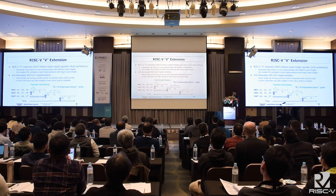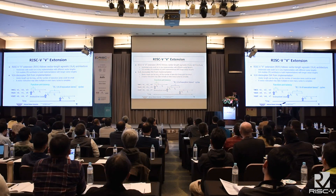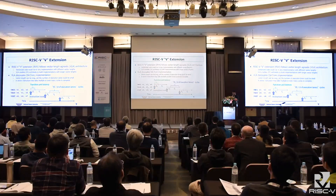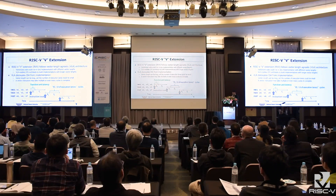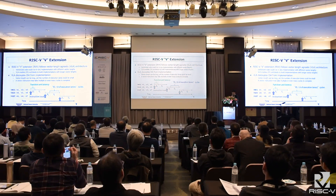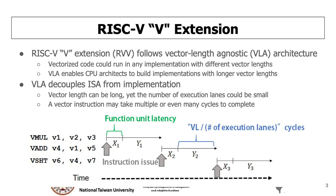The RISC-V vector extension follows the vector length agnostic architecture, which means the programmer or the compiler doesn't need to know the vector length at compile time. So after the code is compiled and vectorized, it could run in any implementation with different vector lengths. The VLA architecture also enables CPU architects to build implementations with longer vector length. So we can see the VLA architecture decouples the ISA from the implementation.